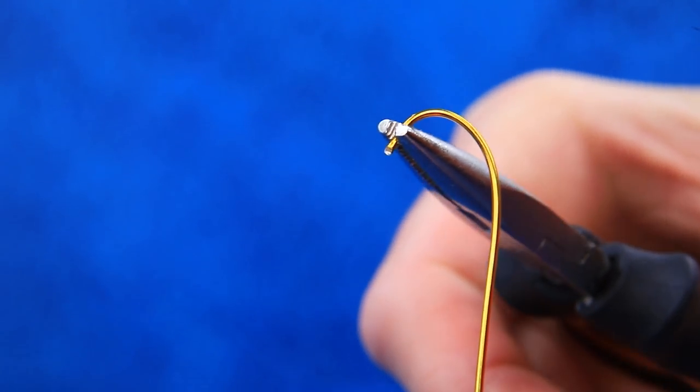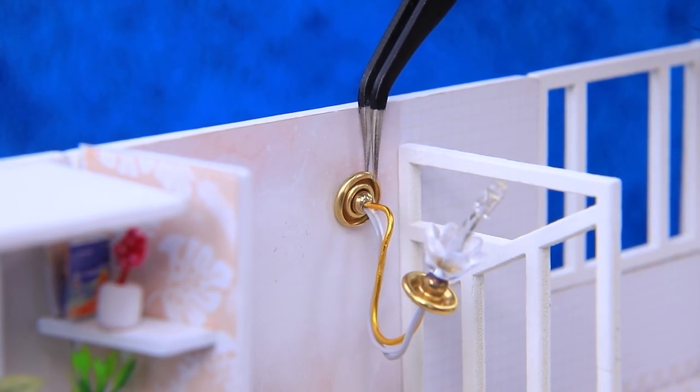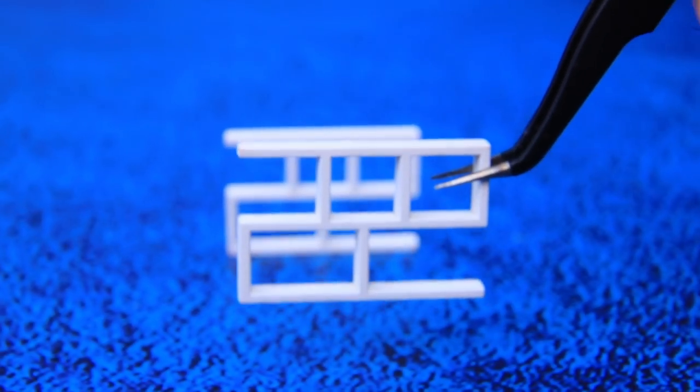Twist a wire to make a hook. We made an elegant wall lamp. Make a hanging shelf.